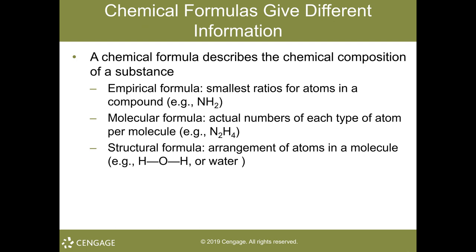Chemical formulas are that shorthand way of writing out the composition of a substance. It could be written as NH2, NH3, or N2H4 as a molecular formula, or by way of a structural formula such as H2O for water. This allows you to quickly look and see just what is the chemical composition of the substance.